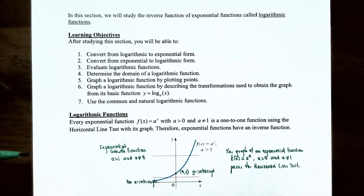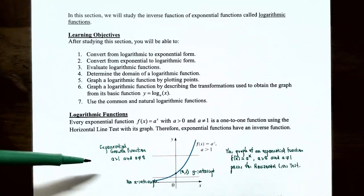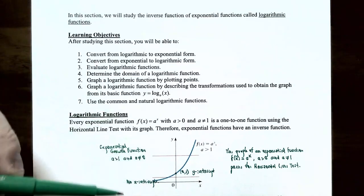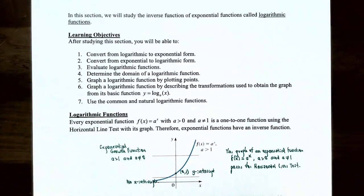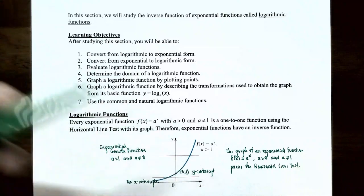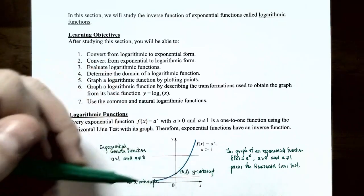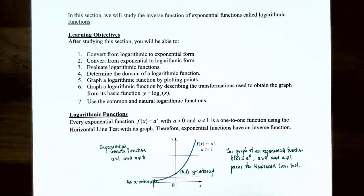An exponential growth function has a base greater than one. Its graph passes through the y-axis at (0,1), grows from left to right, and has no x-intercepts because there's a horizontal asymptote at y = 0 as x approaches negative infinity. As x approaches positive infinity, y increases without bound. Since any horizontal line crosses this graph at most once, the exponential function passes the horizontal line test and has an inverse.